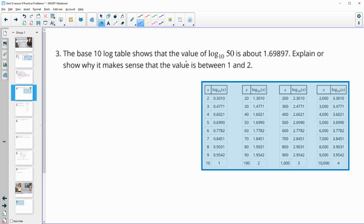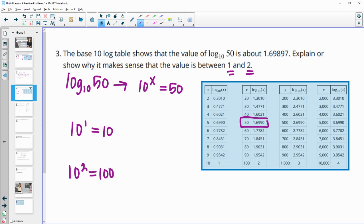Number three, the base 10 log table shows that the value of log base 10 of 50 is 1.69897. Explain why it makes sense that this number is between 1 and 2. Well, log base 10 of 50 is solving the exponential equation 10 to the x equals 50. It's looking for this power. So 10 to what power would give us 50? And we know that 10 to the first equals 10, and 10 to the second equals 100. So 10 to the x equaling 50 would be between these two.